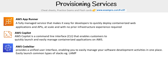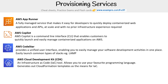We have AWS CodeStar. This provides a unified user interface enabling you to manage your software development activities in one place, and you can usually launch common types of stacks like LAMP. Then we have CDK, which is an infrastructure as code tool that allows you to use your favorite programming language and generates CloudFormation templates as a means of IaC.